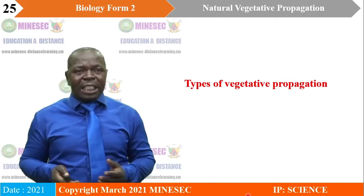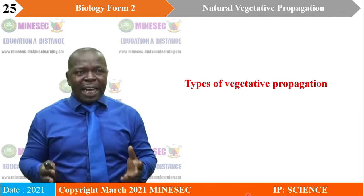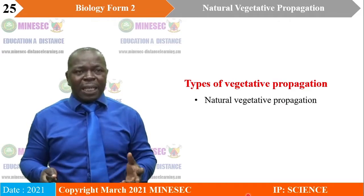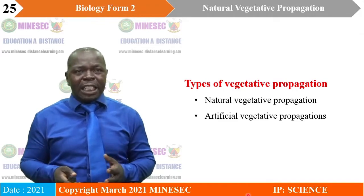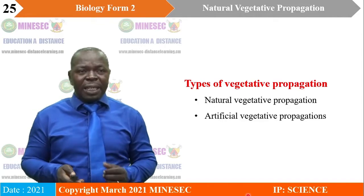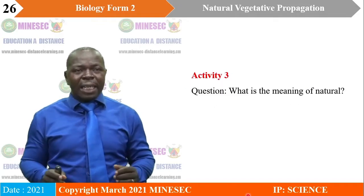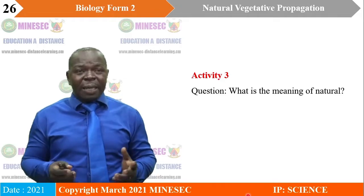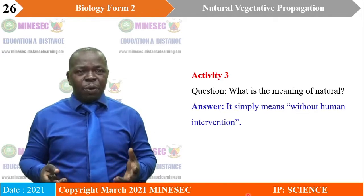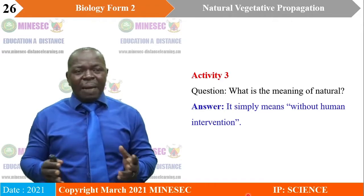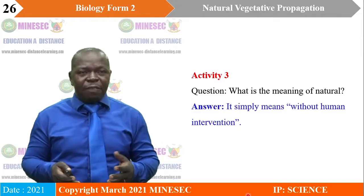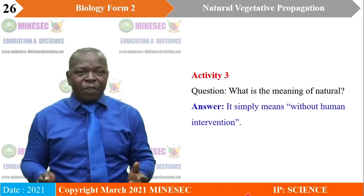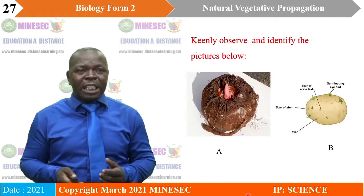There are two different types of vegetative propagation: natural vegetative propagation and artificial vegetative propagation. For now, we will deal with natural vegetative propagation. Natural simply means without human intervention. So, the type of vegetative propagation in which a vegetative organ develops into a new plant without human intervention is known as natural vegetative propagation.